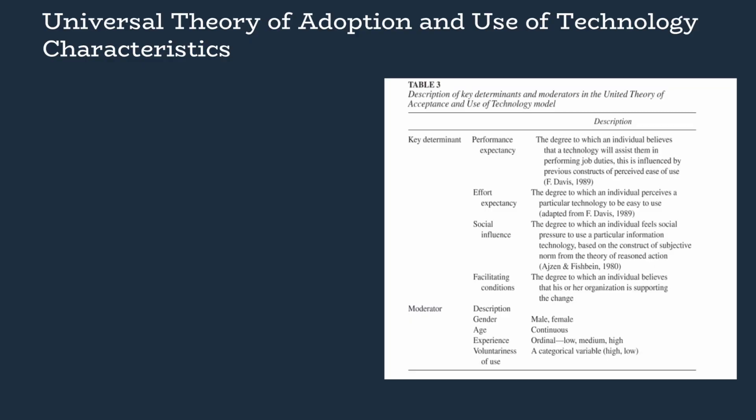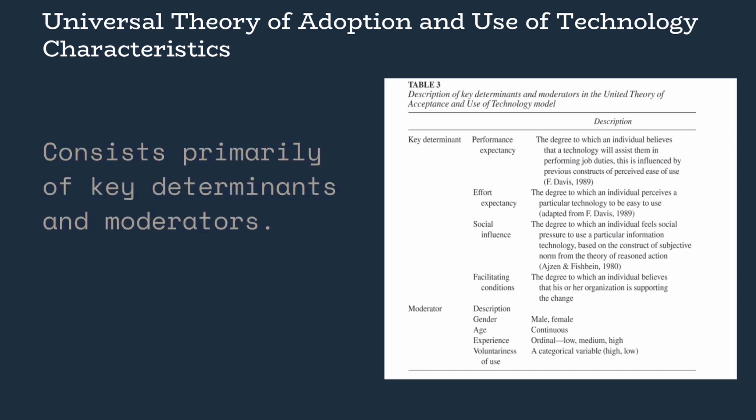Universal Theory of Adoption and Use of Technology Characteristics consists primarily of key determinants and moderators. Performance Expectancy: the degree to which an individual believes that using the system will help him or her to attain gains in job performance.